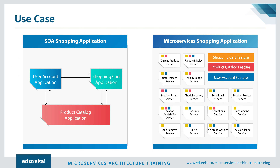All these tasks together form one particular application service in case of an SOA shopping application. But in case of a microservices shopping application, each of the different tasks that these services provide are broken down into smaller fine-grained services. So here we have feature-level services where shopping cart, product catalog, and user account application are each one feature. But in microservices, we have a separate billing service, a shipping options service, and a tax calculation service. For product catalog we have a display product service, an update display service, and a user default service. For user account we have a send email service and many more.